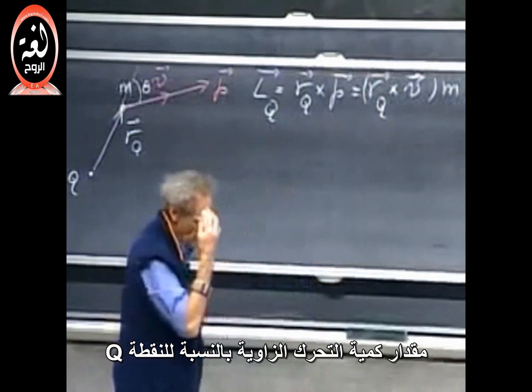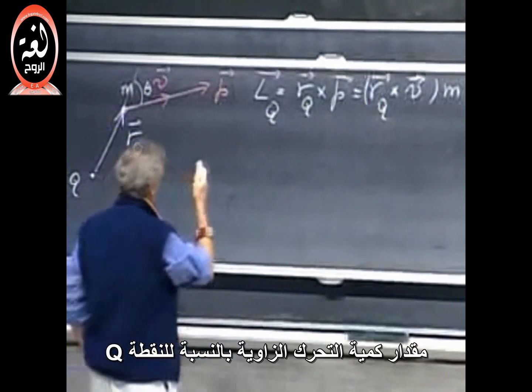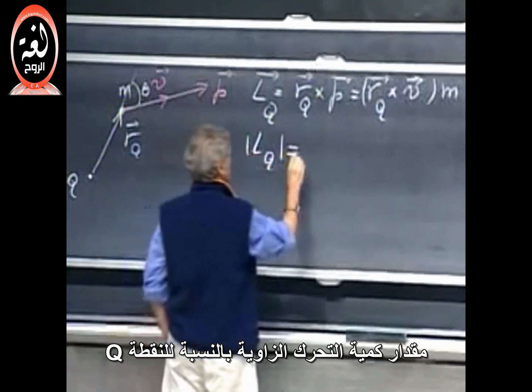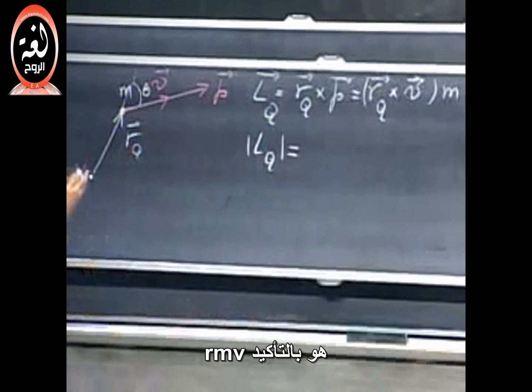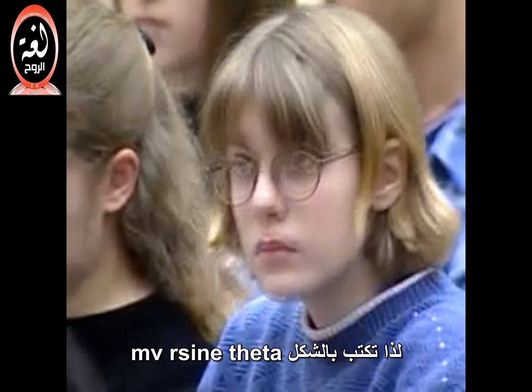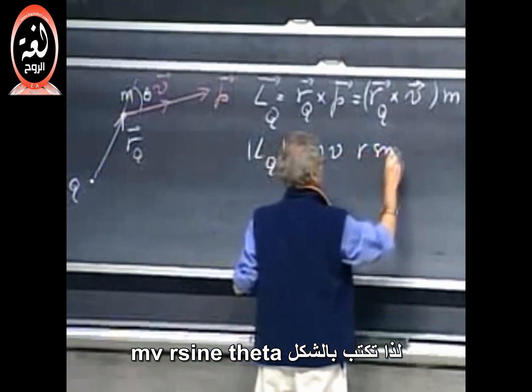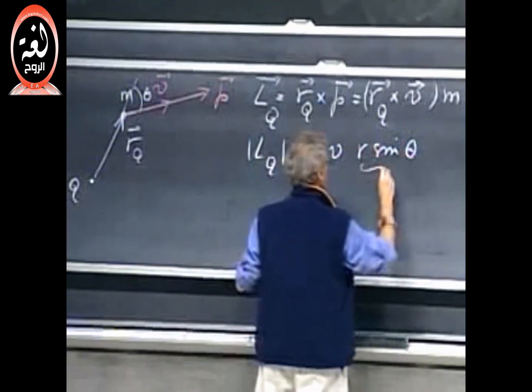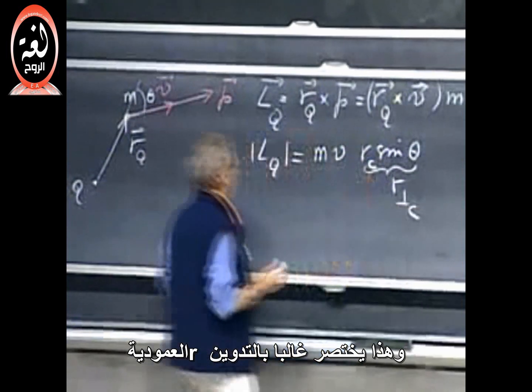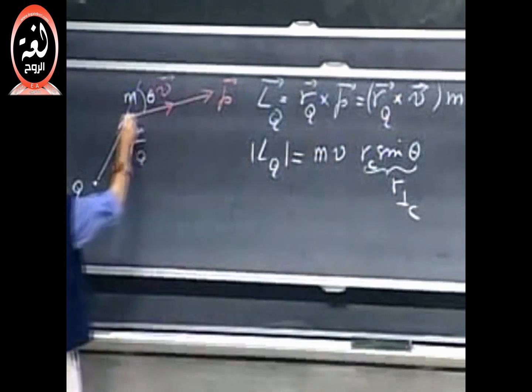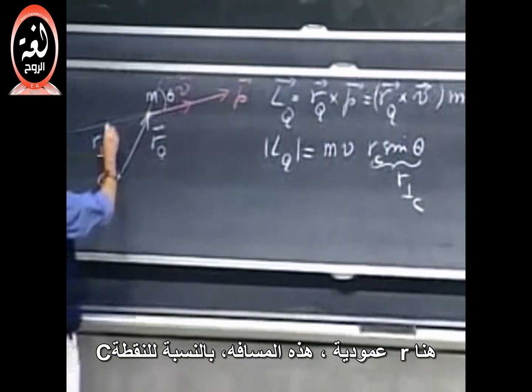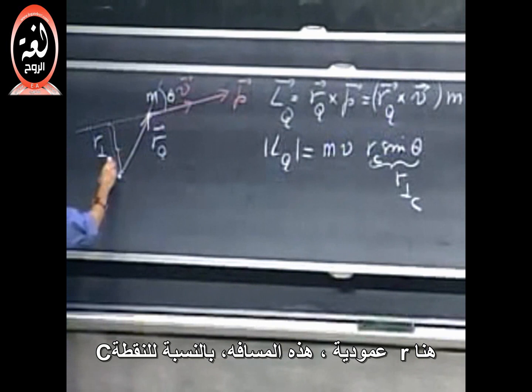The magnitude of the angular momentum relative to point Q is, of course, R mv, but then I have to take the sine of the angle theta. So, let's say it is mv R sine theta, and this I often call shorthand notation R perpendicular.